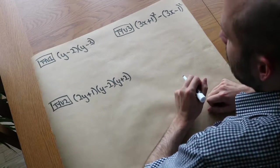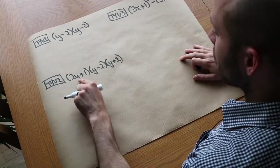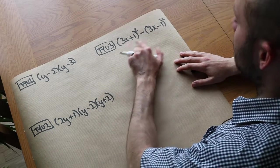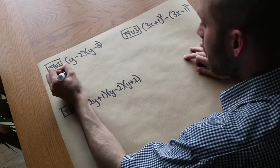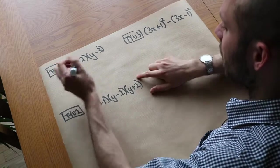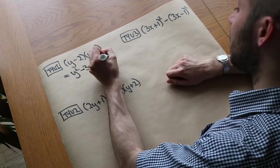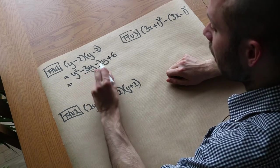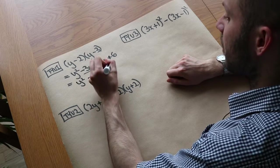Now three test-your-understanding questions. First: expand and simplify (y − 2)(y − 3). y times y is y squared. y times minus 3 is minus 3y. Minus 2 times y is minus 2y. And minus 2 times minus 3 is plus 6, because negative times negative is positive. Collecting: minus 3y minus 2y is minus 5y. So the final answer is y squared minus 5y plus 6.